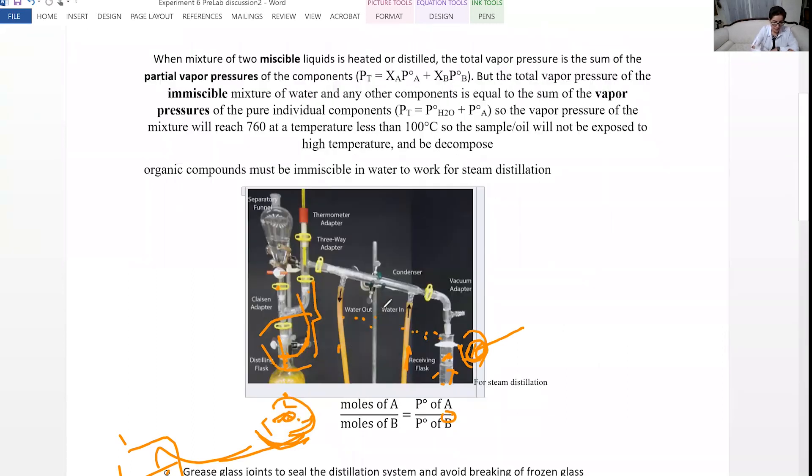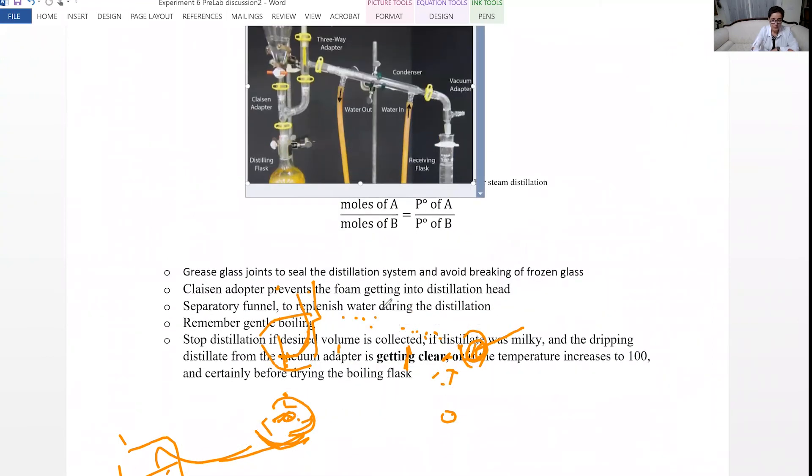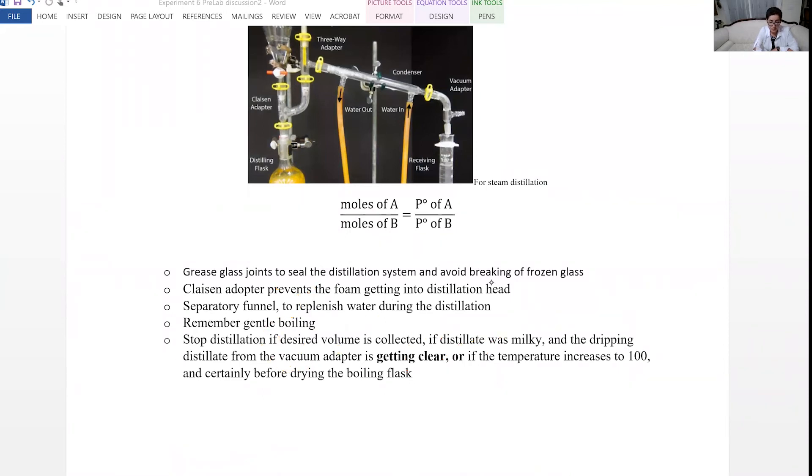Okay, we want to look at some of the points to remember. Grease all glass joints because we want to make sure that we have a sealed system and we also want to avoid breaking of the frozen glass, like frozen glass that means glasses that are stuck together. Claisen adapter prevents foam getting into distillation. Separatory funnel is used to replenish the water during distillation. So if you see it's drying out, add more water from the separatory funnel.